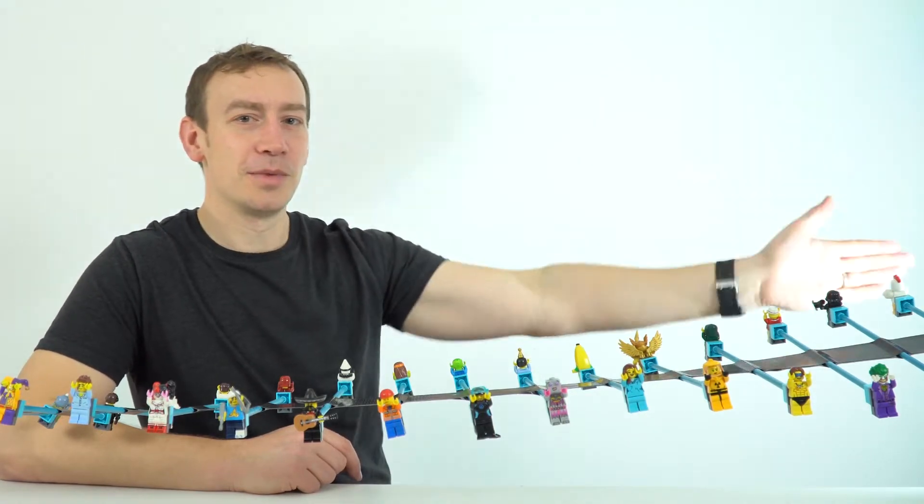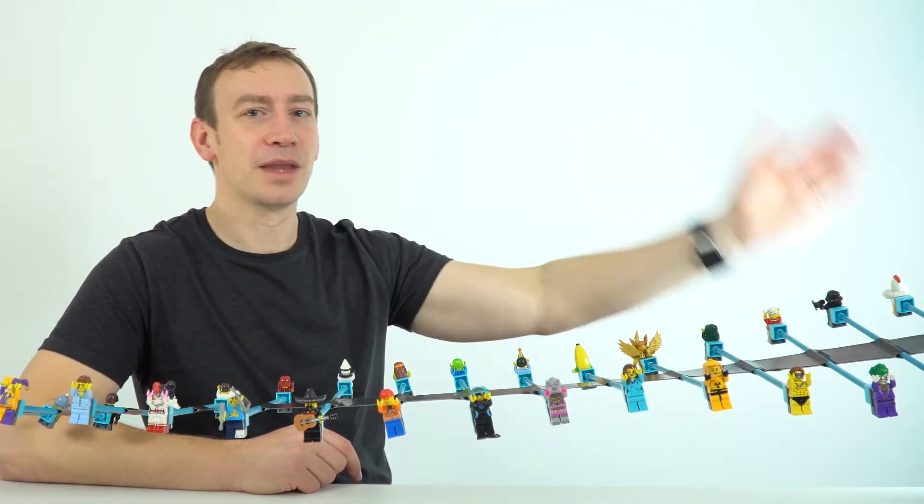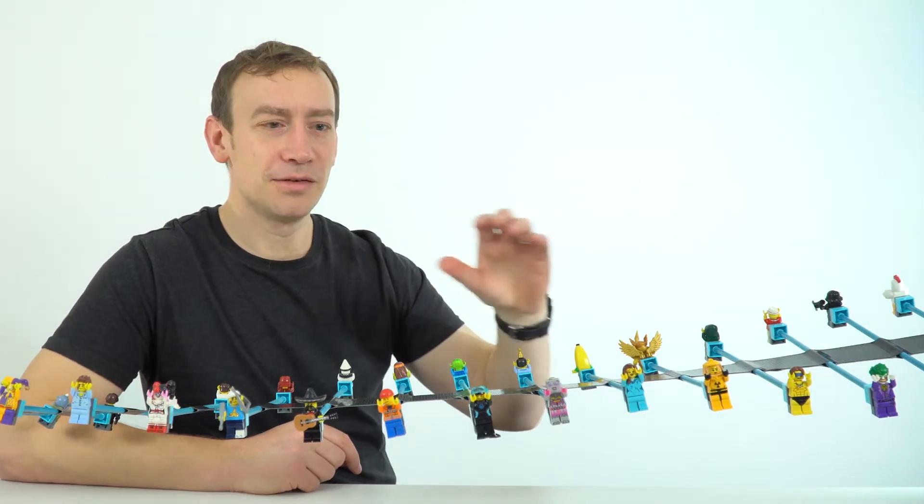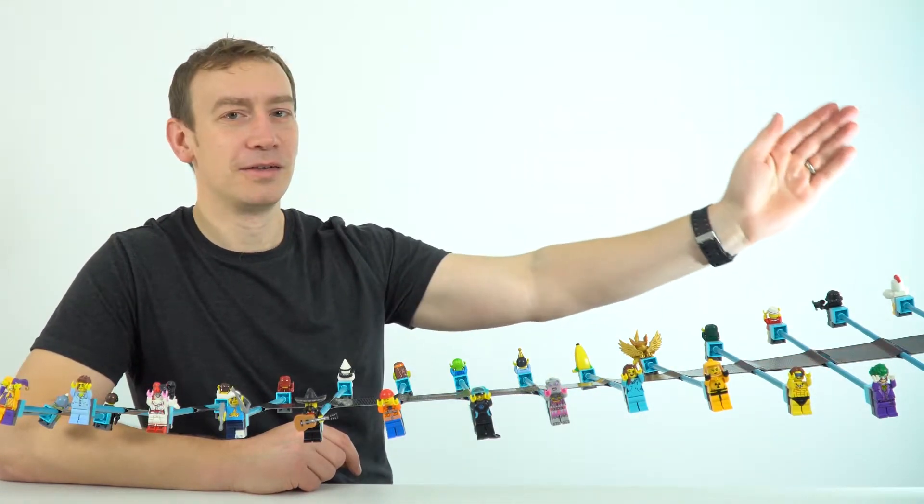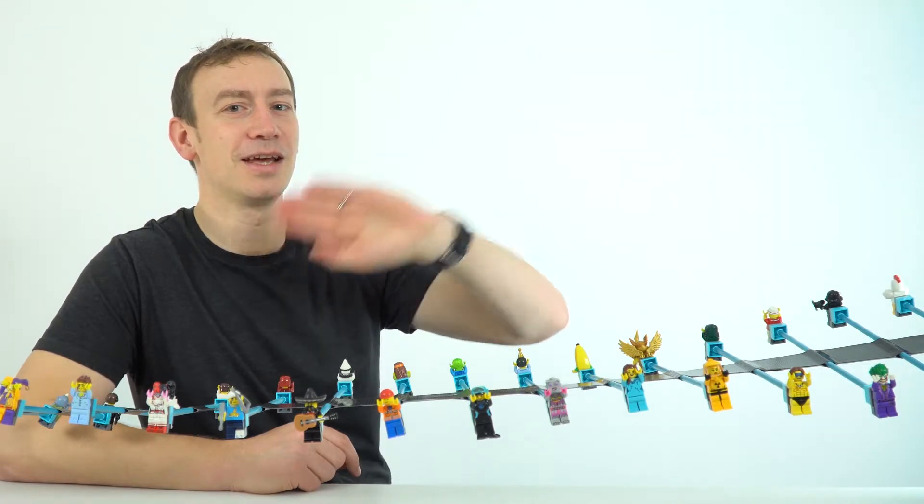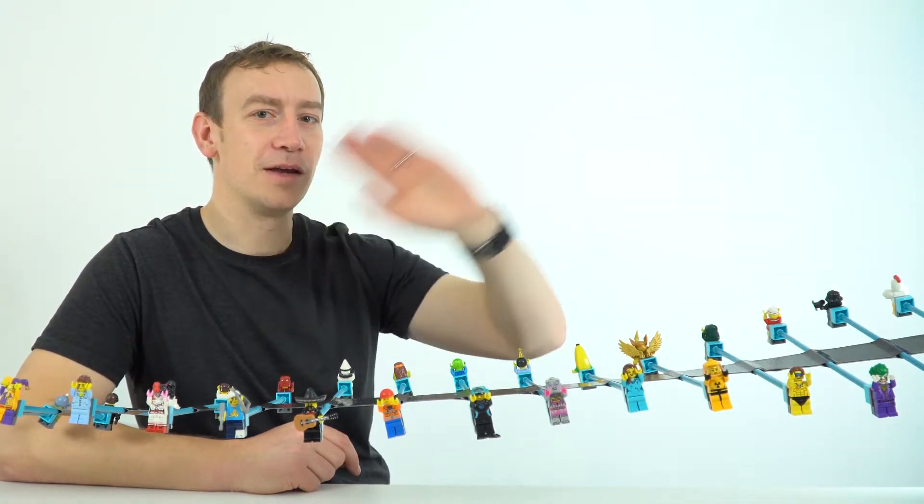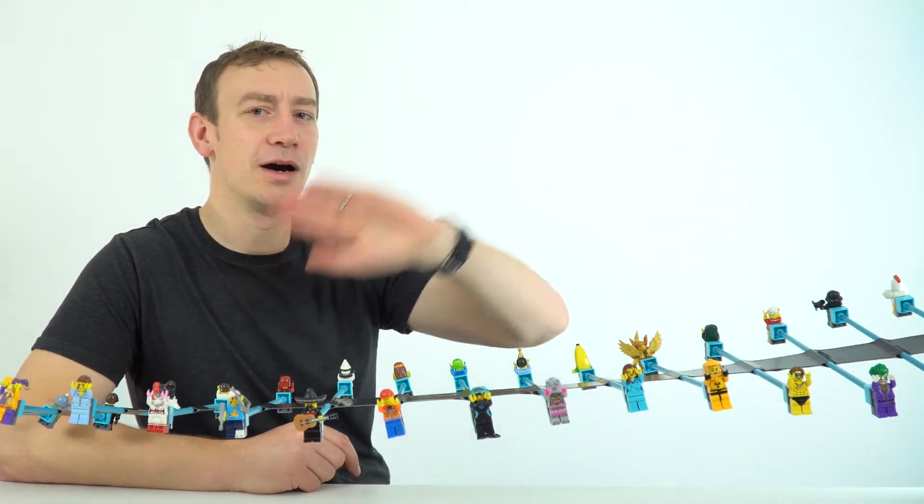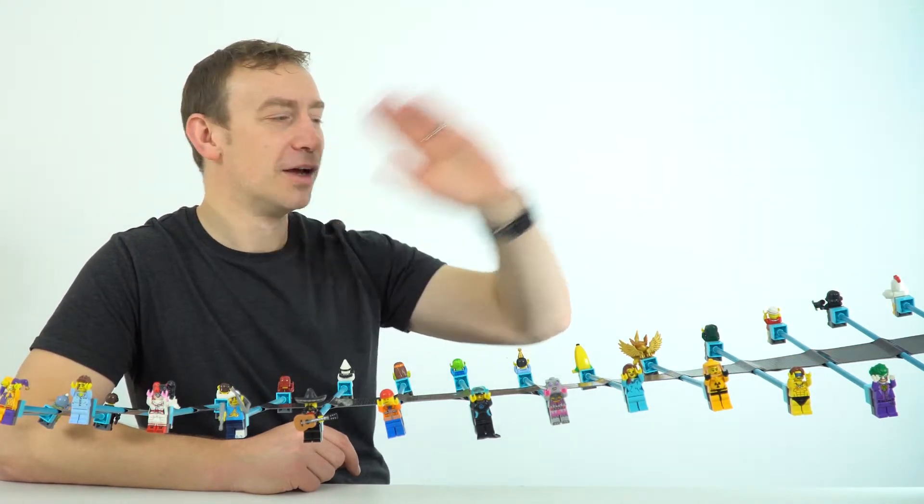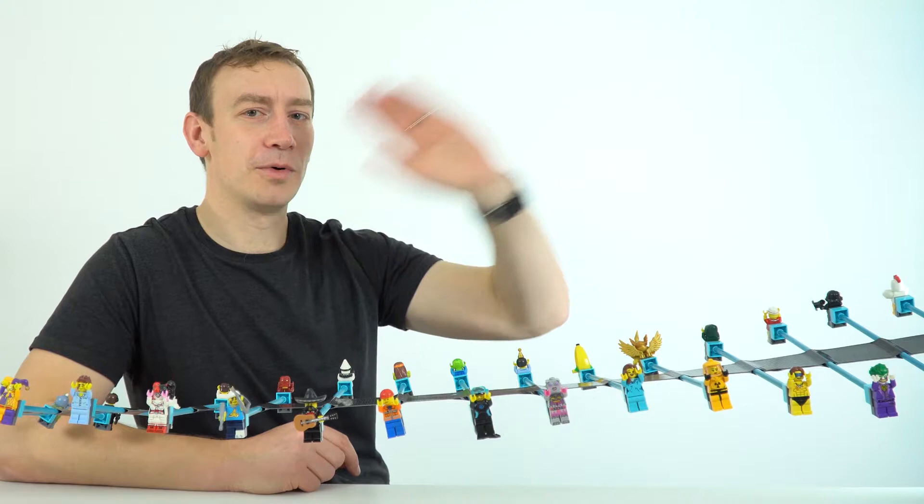So a time period of one, a frequency of one. If I wanted to increase the time period to two seconds a wave, so I go from here to here to here, now it takes two seconds per wave, but I'm only actually doing half a wave per second. So I've got a frequency of 0.5 hertz.